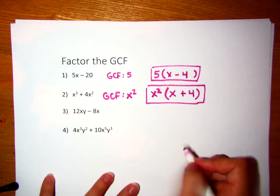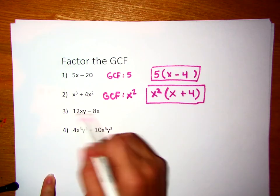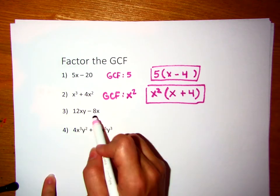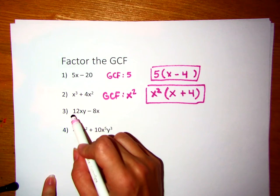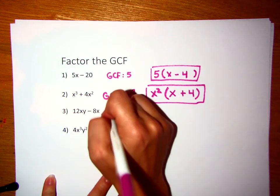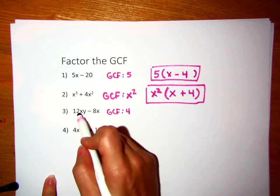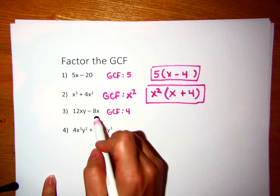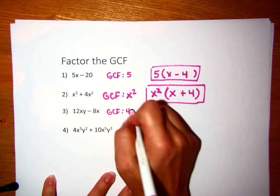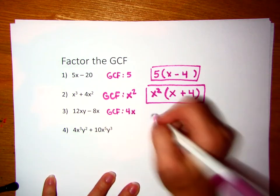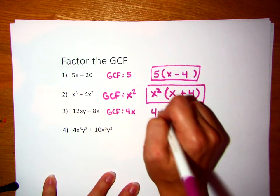If you look at this one, what's the largest number we can divide out of both 12 and 8 evenly? That is actually 4. In addition, both of these terms have what letter? x. So we can take out an x out of both terms as well. So my GCF is 4x.